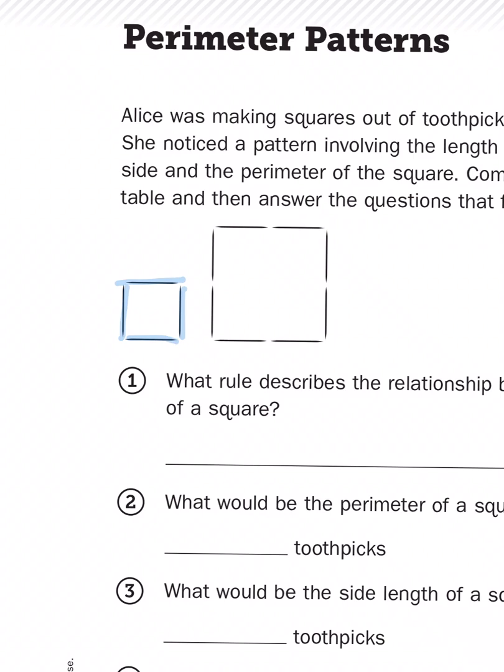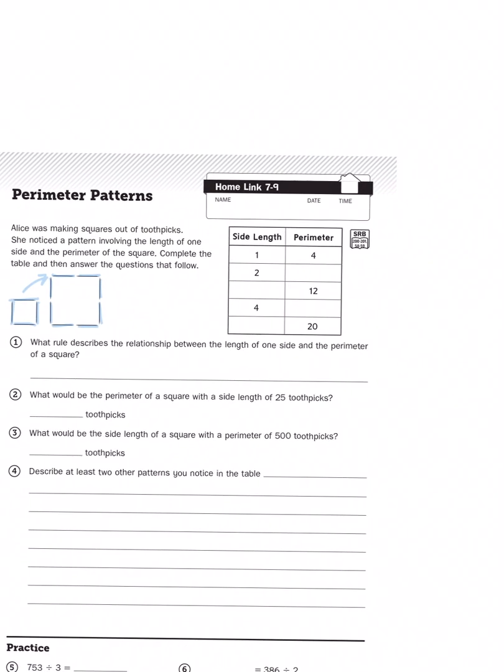Now, when she doubled the number of toothpicks she used per side, that basically doubled the perimeter. Since she had one toothpick per side with the small square, then she made two toothpicks be the sides for her bigger square.